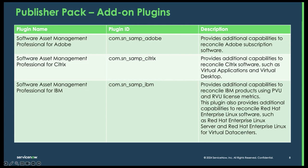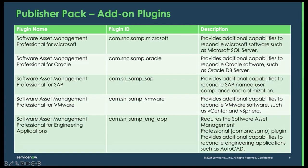In addition to the plugins, we have some publisher packs. These are additional add-on plugins that give us additional functionality and capabilities for reconciling some complex top-tier publishers. We have Adobe, Citrix, and IBM, as well as Microsoft, Oracle, SAP, VMware, and finally a publisher pack for engineering applications — such as AutoCAD — that are going to need a license server.